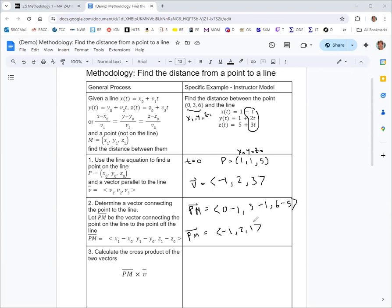In step 3, we find the cross product of the vectors from steps 1 and 2. PM from step 2, crossed with v from step 1.